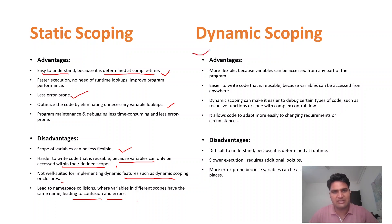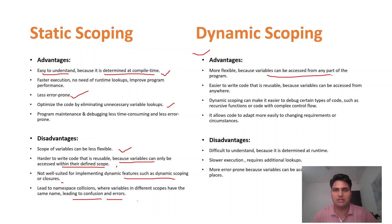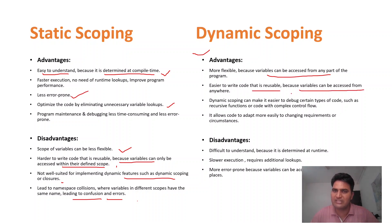Coming to dynamic scoping — there are some advantages and disadvantages. Advantages: it is more flexible because variables can be accessed from any part of the program through the calling chain. For example, if function 1 calls function 2, which calls function 3, a variable is accessible through that chain. Dynamic scoping can also make it easier to debug certain types of code, such as recursive functions or code with complex control flow.